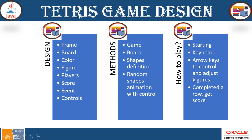When we look at the methods, we have a game, we have a board, and we have to have a shapes definition. When we have a figure, the tiles and blocks have to be mentioned in a particular shape with specific size and colors, and random shapes animation with control. We have to implement a few methods which will work with your controls.